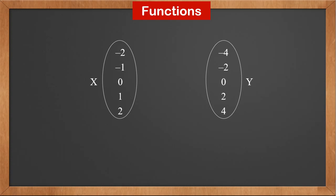Here are two sets of numbers, x and y. There's a mapping, 2x. It maps every member in set x to a member in set y which is twice as much as x. Minus 2 is mapped to minus 4, minus 1 is mapped to minus 2, 0 is mapped to 0, 1 is mapped to 2, and 2 is mapped to 4.